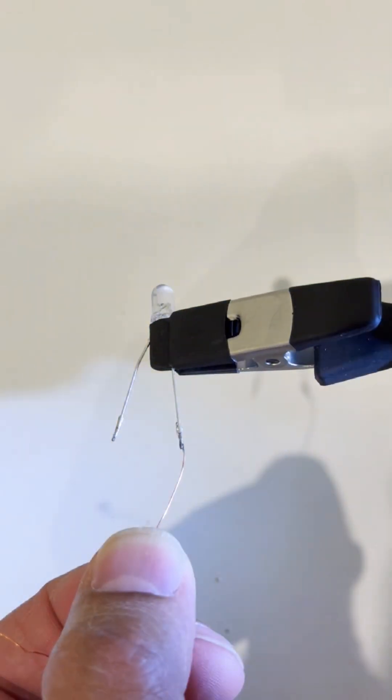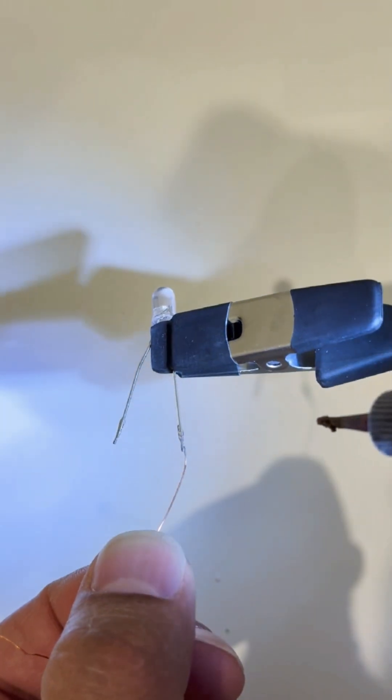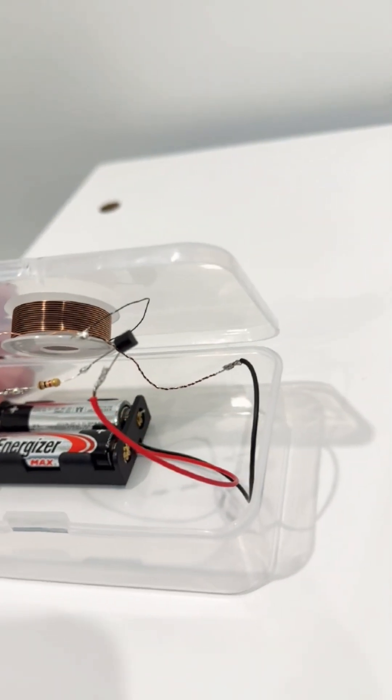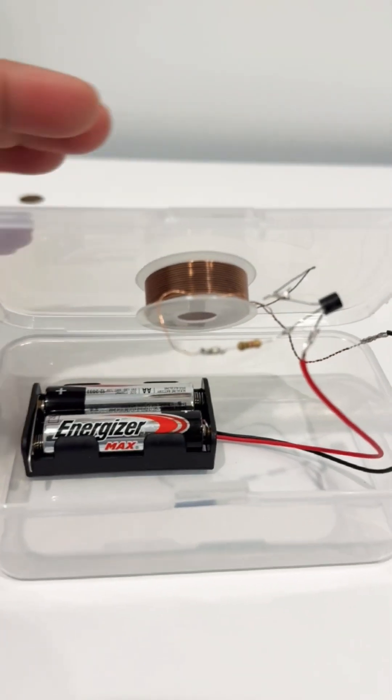This creates a magnetic field that oscillates rapidly. When we place the second coil, the receiver nearby, that changing magnetic field induces a current in it.